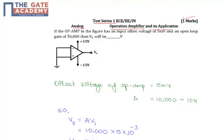The question says that if the op-amp in the figure shown below has an input offset voltage of 5 millivolts and an open loop gain of 10,000, then we need to find out the output voltage.